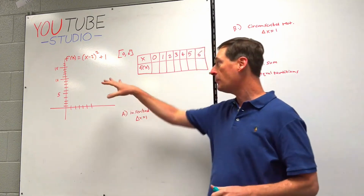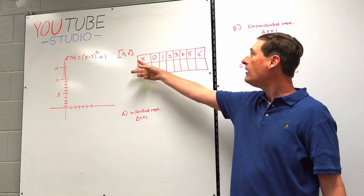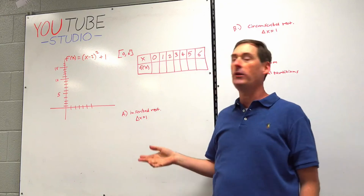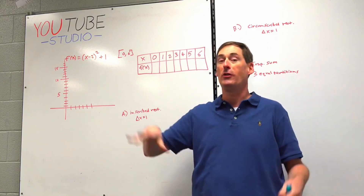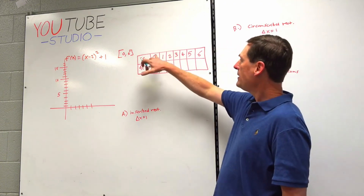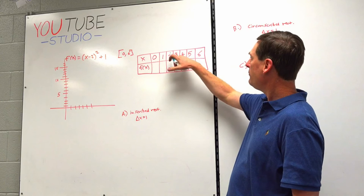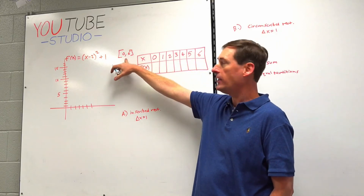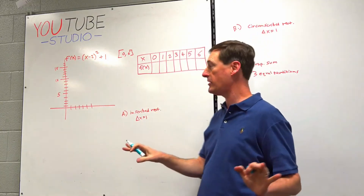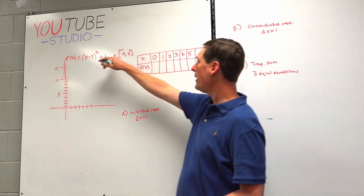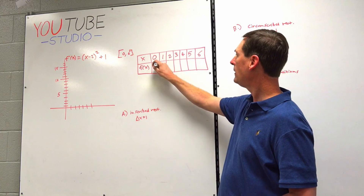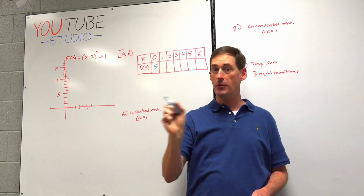This is the only time I would have you go back and fill out a table like you used to when you were little kids in integrated 1. So for this one problem, I'm going to take 0, 1, 2, 3, 4, 5, 6 — all the integers on this closed interval — and plug them into this equation so we can be super specific just for this lesson. I take 0, plug it in: 0 minus 2 is negative 2, negative 2 squared is 4, plus 1 is 5. So I'm aiming for the point 0, 5.